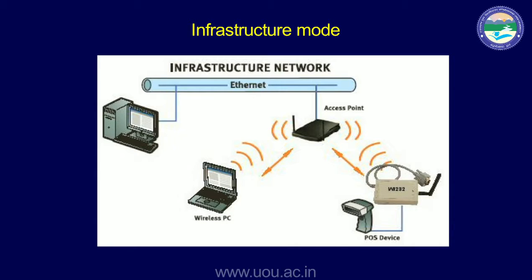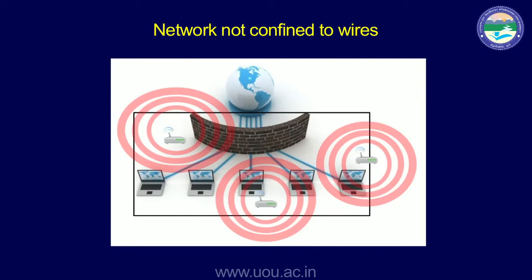In infrastructure mode, the difference is that devices are not connected directly to each other — they are connected to the access point, the Wi-Fi access point or router. The challenge that Wi-Fi and wireless networks bring is that the network is not confined to wires. Someone can access the access point from outside the premises of an organization or home.